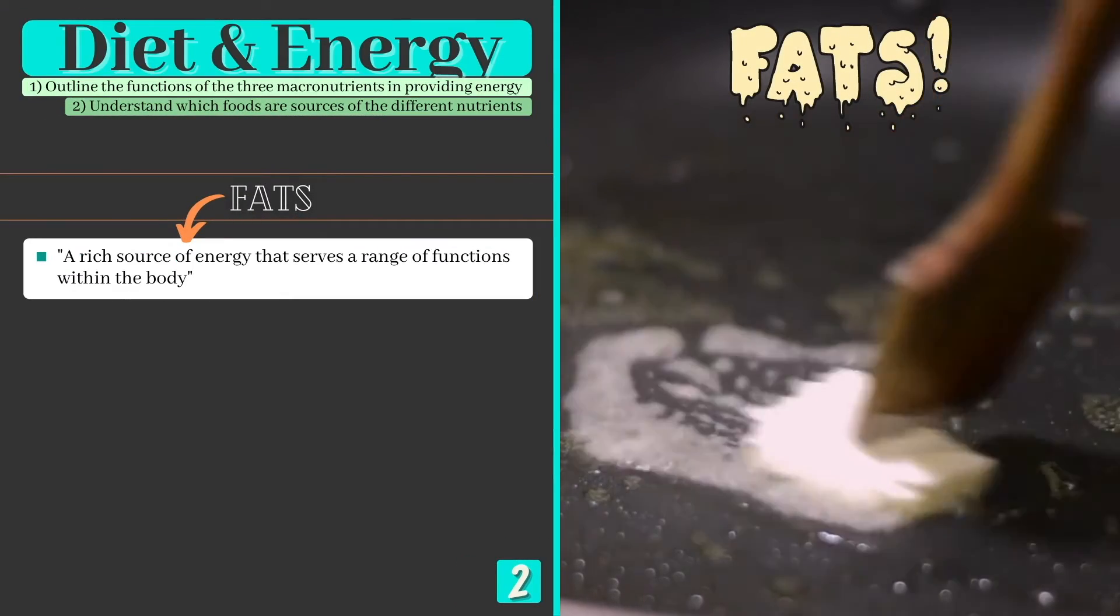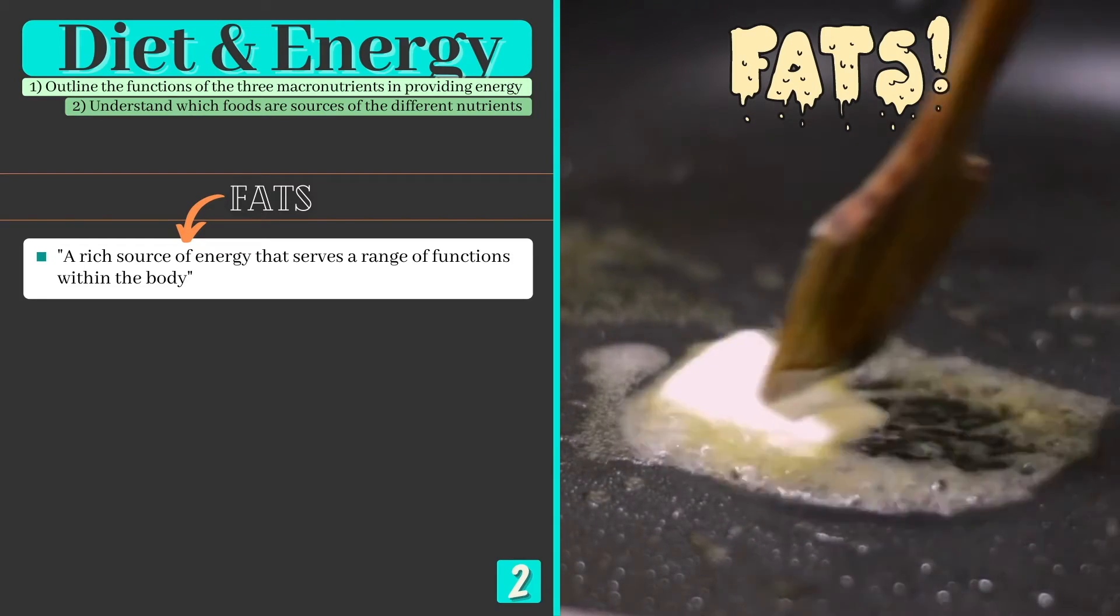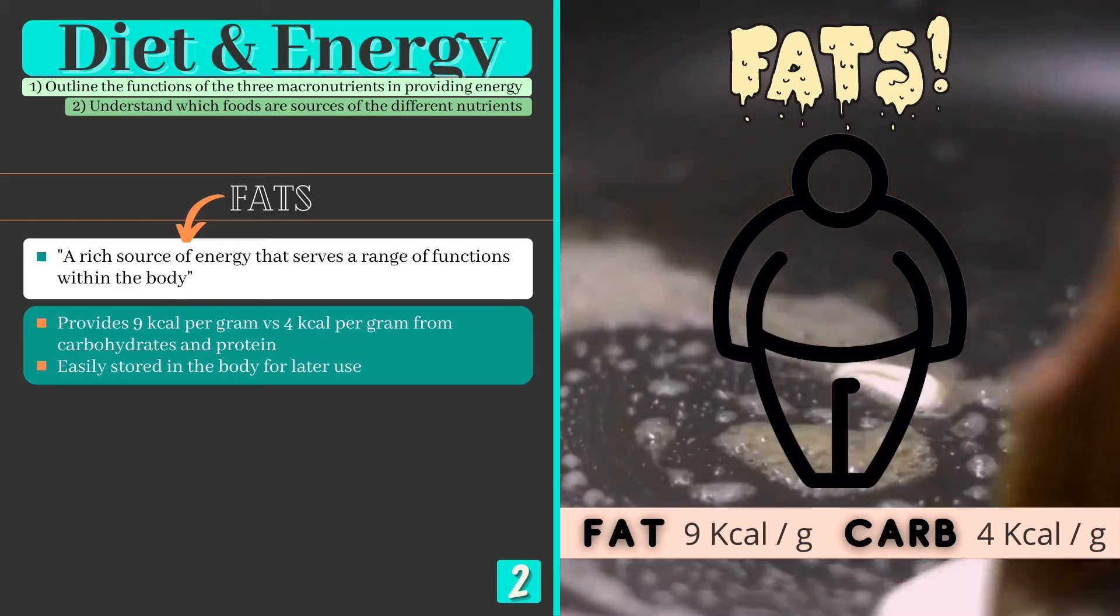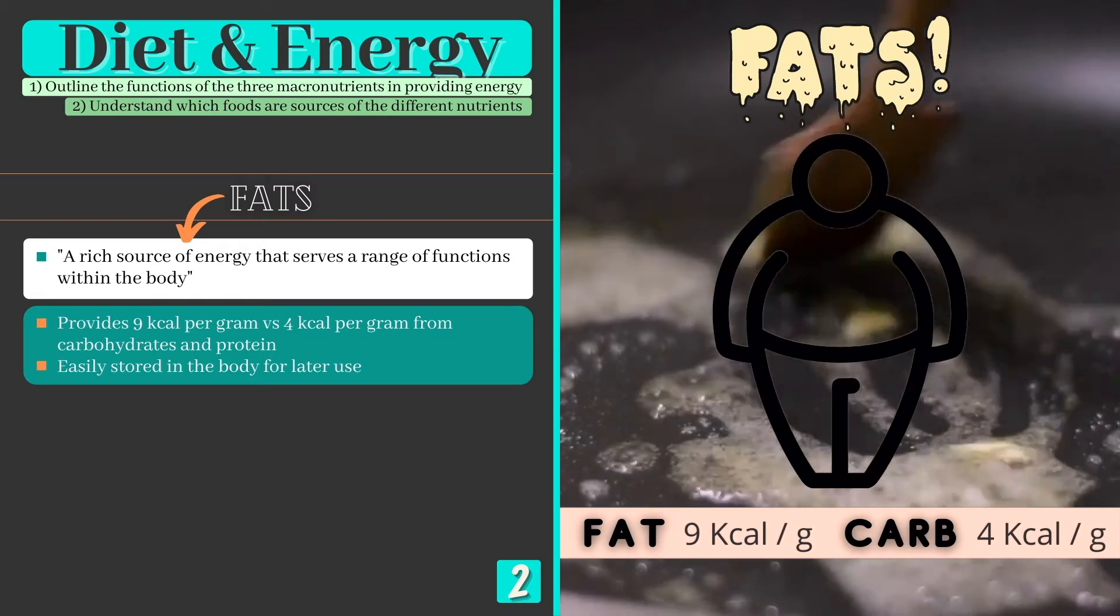Fats are our second macronutrient and are a rich source of energy that serves a range of functions within the body. Fats actually provide over two times the energy contained within carbohydrates and can easily be stored for later use.